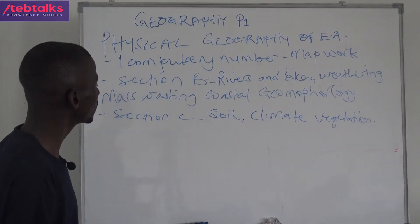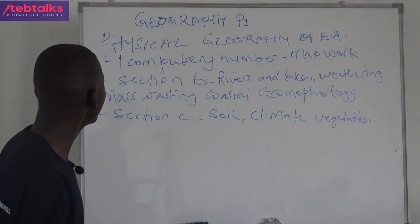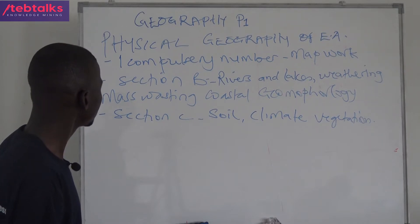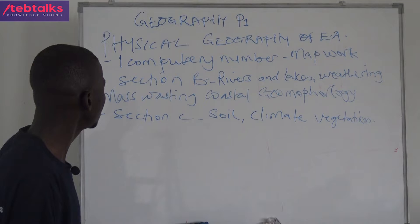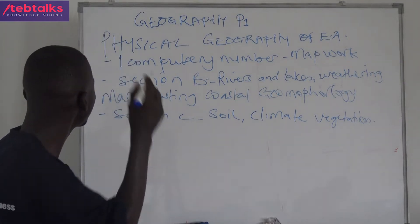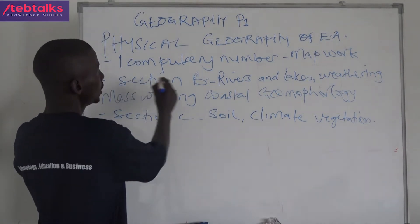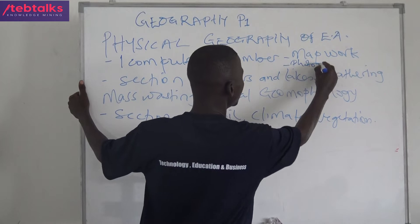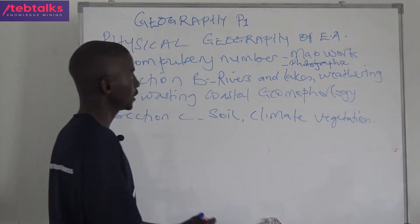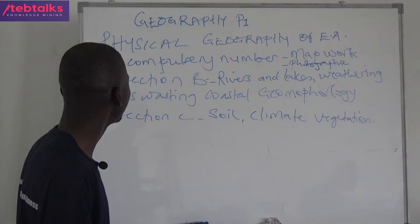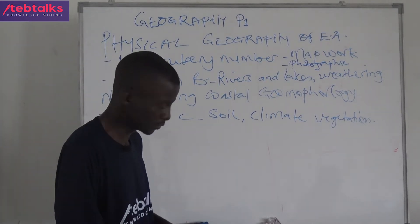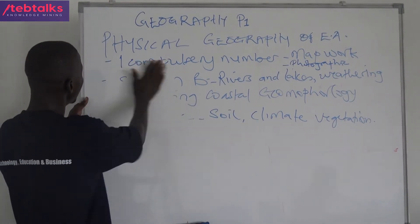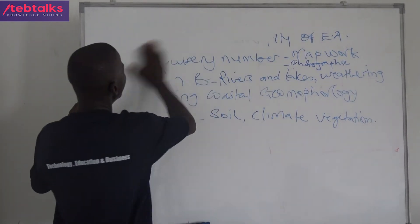Section A is compulsory, worth 25 marks. Then Section B covers lakes, weathering, mass wasting, coastal morphology, and so on. Also still on the compulsory section is photographic interpretation, also taking 25 marks. So today's lesson is going to be on map work, which is compulsory, worth 25 marks.